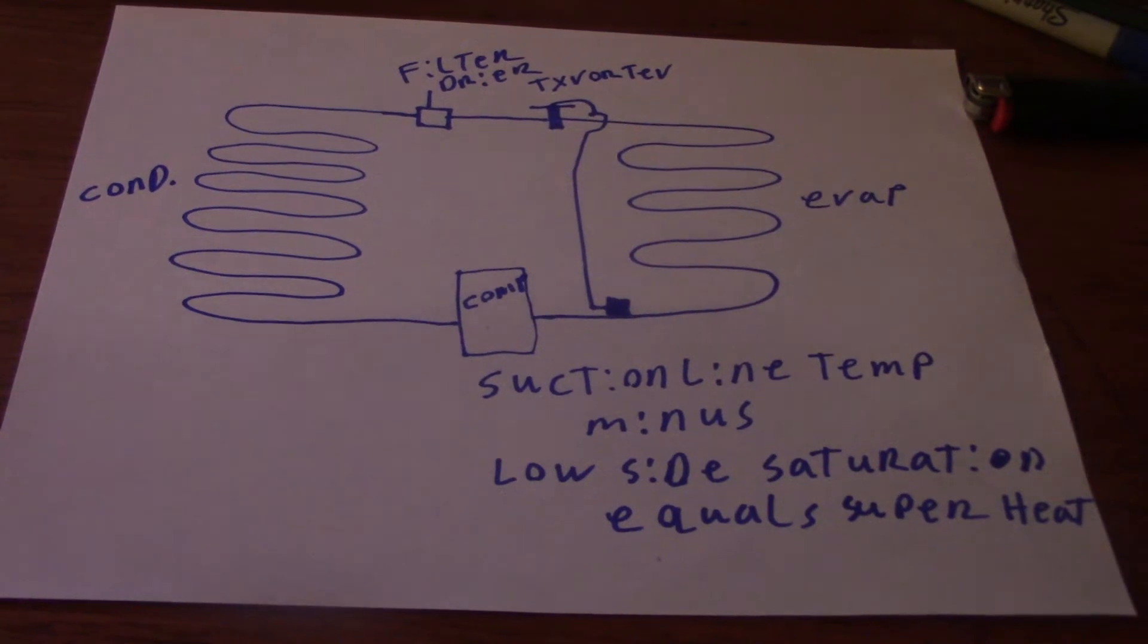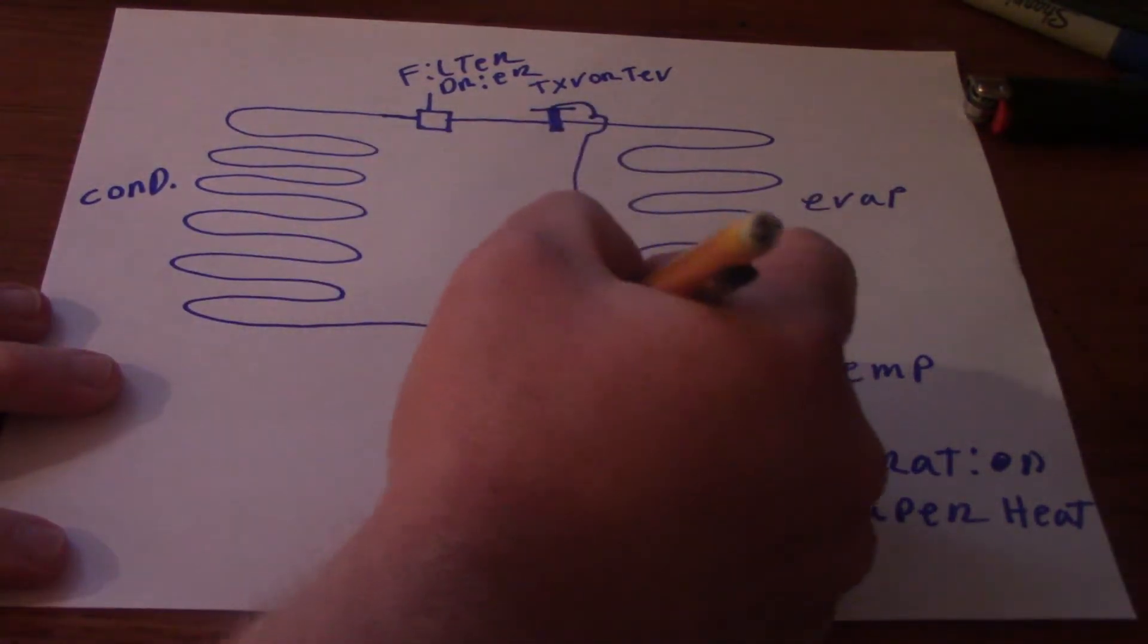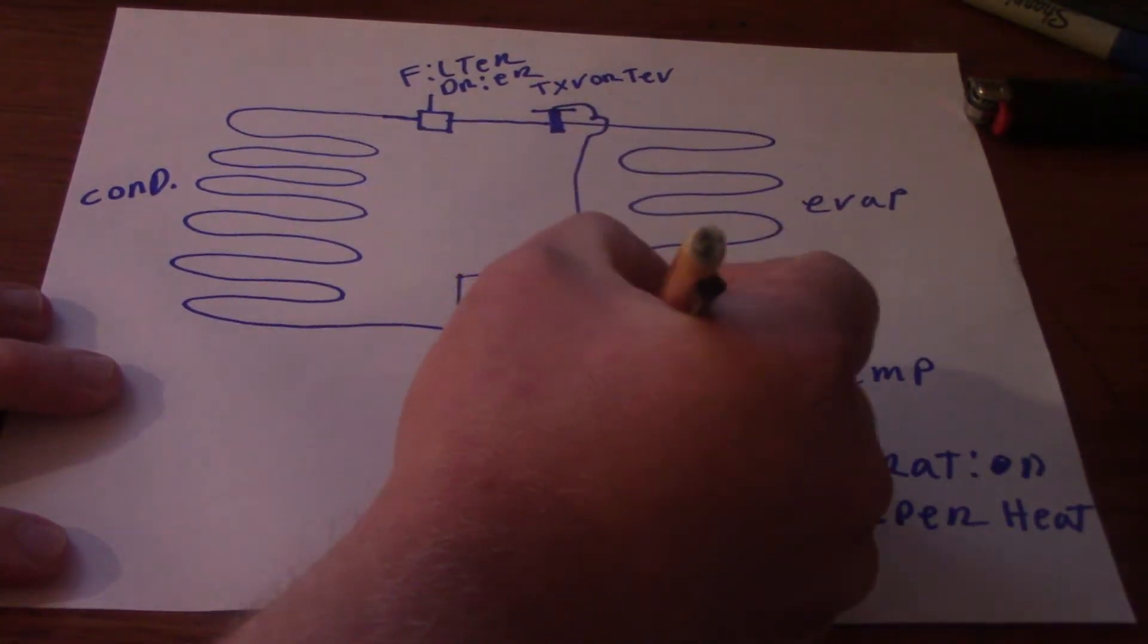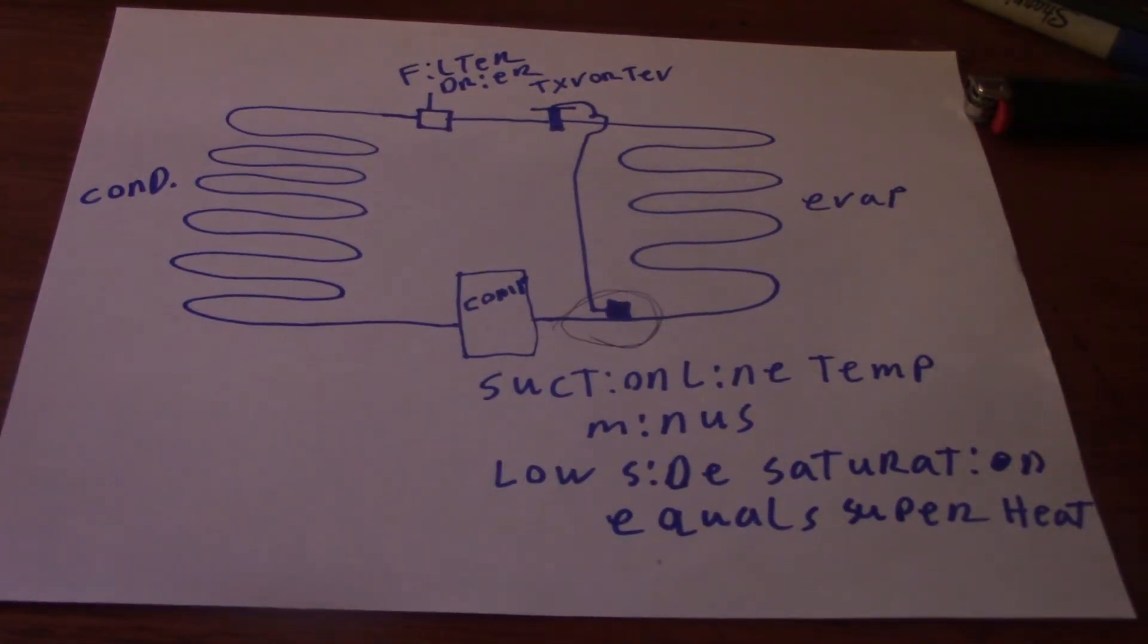Essentially you're going to take a superheat measurement for suction line temperature and pressure right in this area on the low side of the system. For more accuracy you want to be as close to that sensing bulb for your TXV as possible.